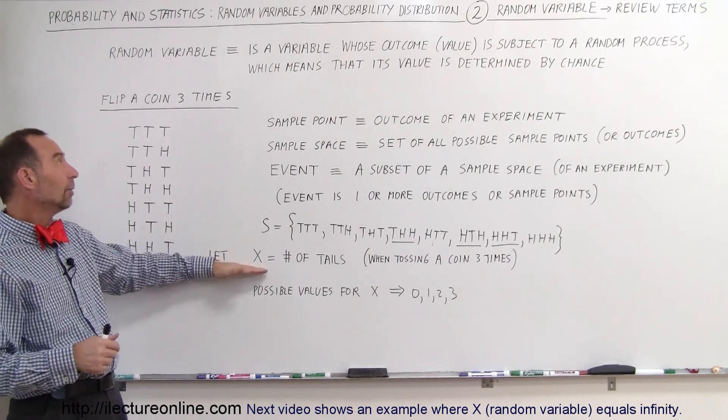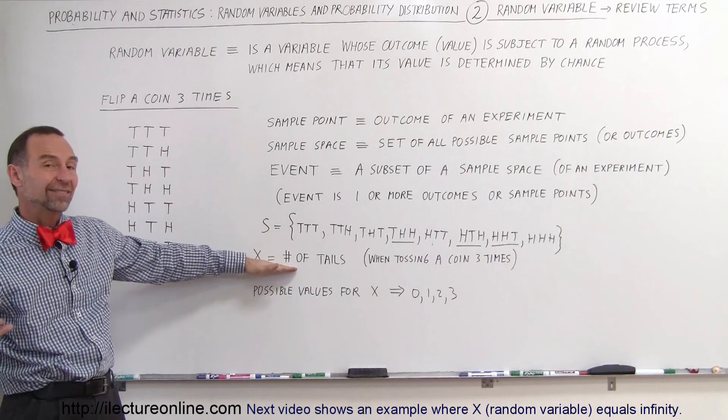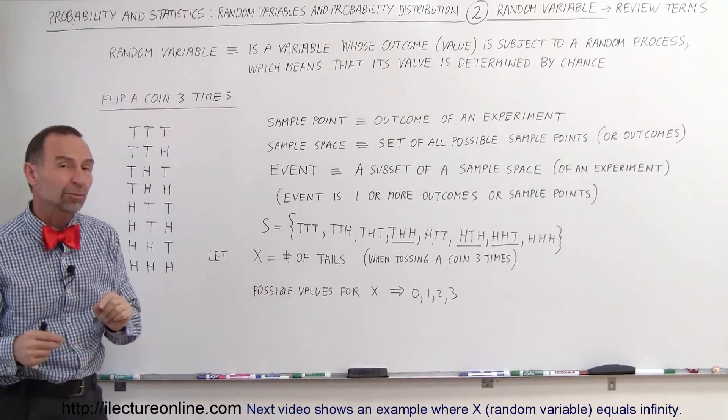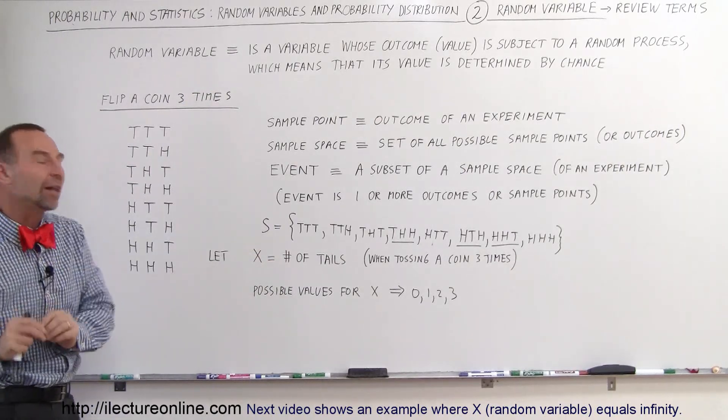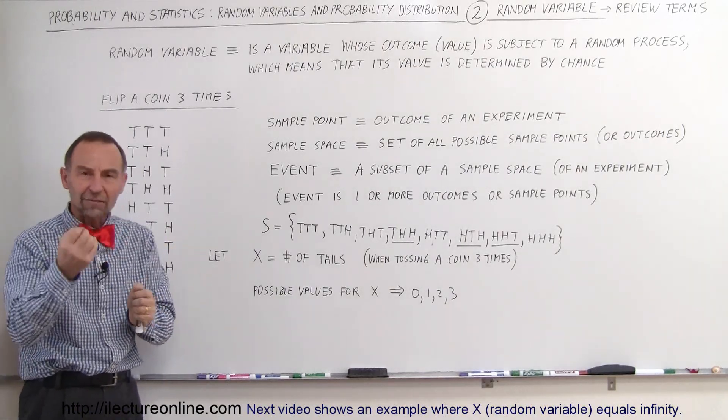And X now, X being the random variable, in this case, let's say we define it as the number of tails, but that doesn't assign a particular value to X. That's the interesting thing about a random variable. A random variable doesn't have a single value.